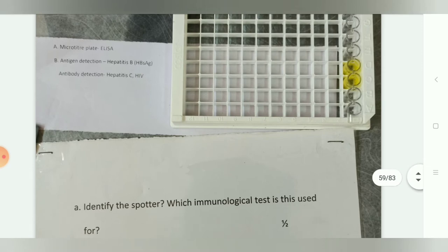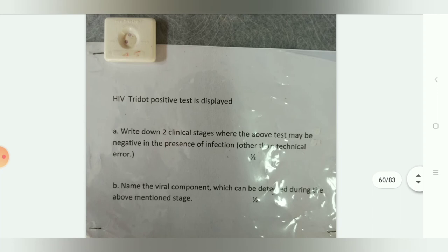The next structure shows an HIV rapid test in a positive state. Write down two clinical stages where this test may be negative in the presence of infection. It can be negative during the window period. The viral component detectable during this stage is the p24 antigen.